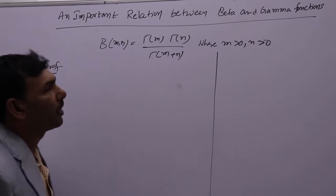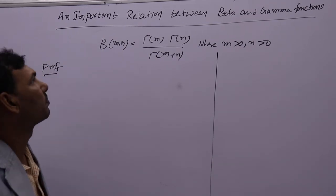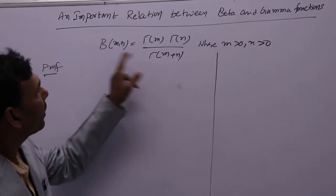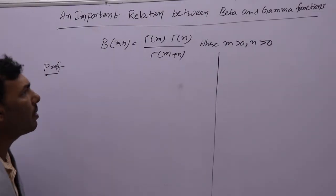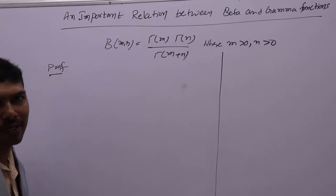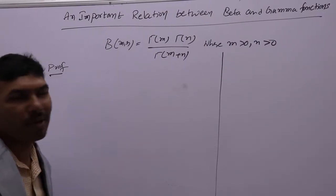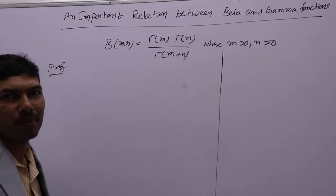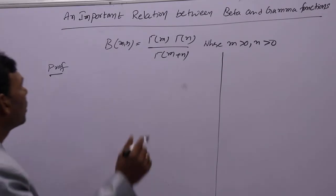Important relation between beta and gamma function. Beta and gamma are related by this relation: beta(m,n) equals gamma(m) into gamma(n) by gamma(m+n). How to prove this one?